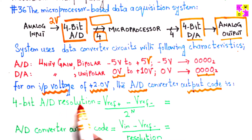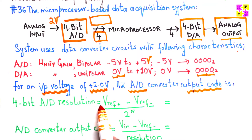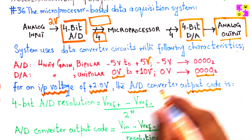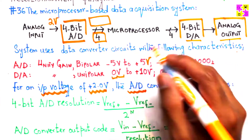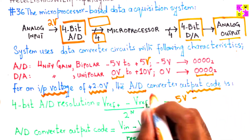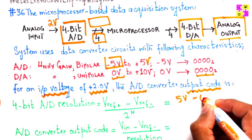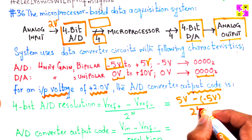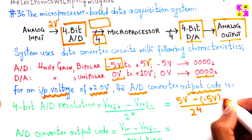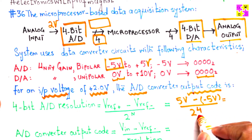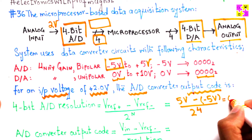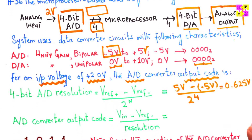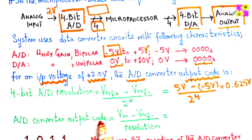The resolution for a 4-bit analog-to-digital converter is the difference of V-ref-positive minus V-ref-negative, divided by 2 to the power n. Here, V-ref-positive is 5 volts and V-ref-negative is negative 5 volts, and n is 4 because it's a 4-bit system. So the math gives us 10 divided by 16, which equals 0.625 volts.